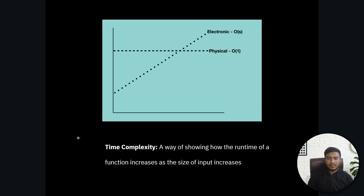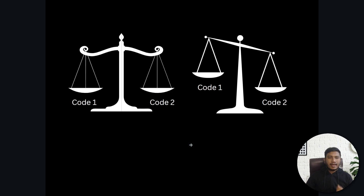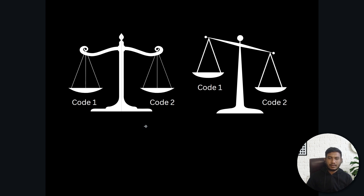An algorithm is nothing but the steps of any task. Whenever we write any kind of code, how much time that code takes to run and give output is called time complexity. Let's say I have two codes — code one and code two — that give the same output but are written in different ways, for example summing 10 different numbers.